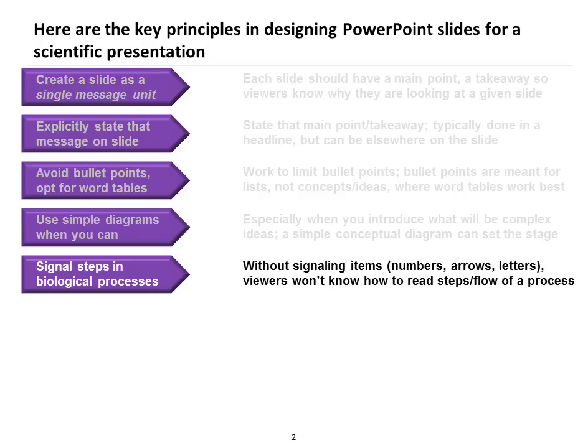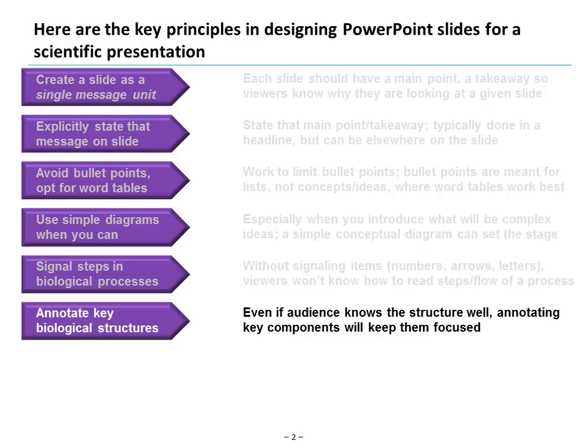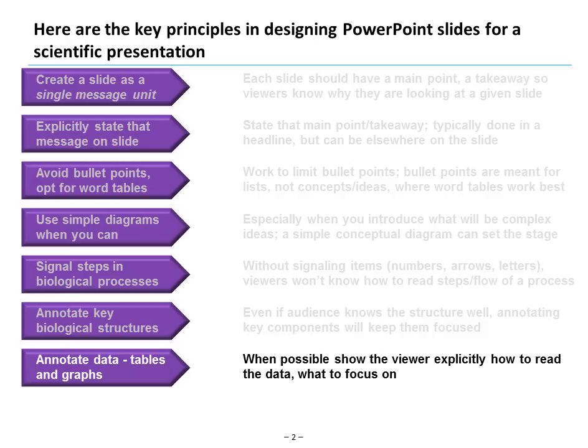Make sure you signal the steps in biological processes using signaling items like arrows, numbers, and letters — without them, no one will understand the flow of the process. Annotate key biological structures even if you think your audience already knows them. When you annotate those key components, they will focus on the things you want them to focus on.